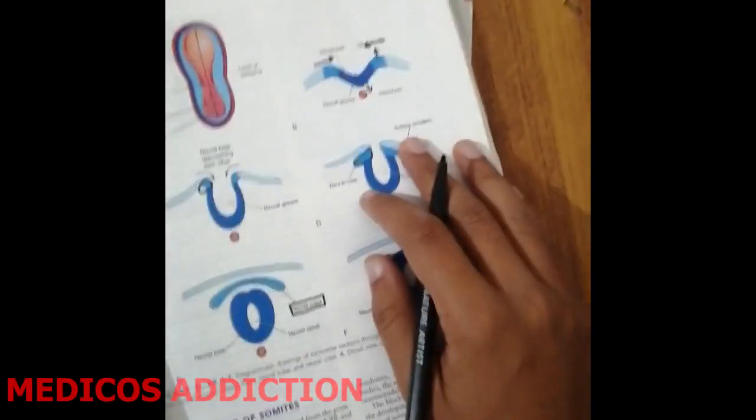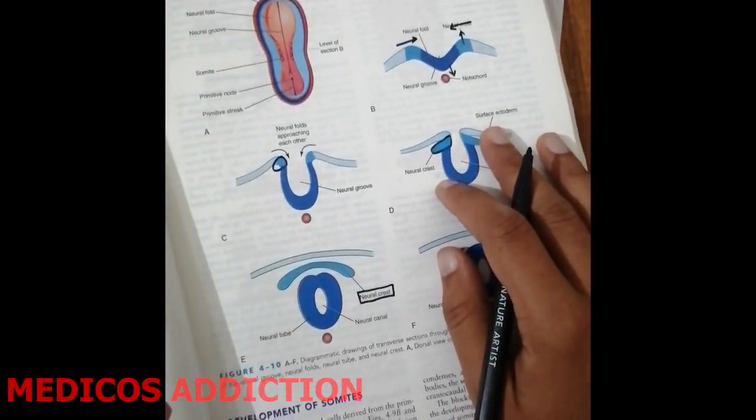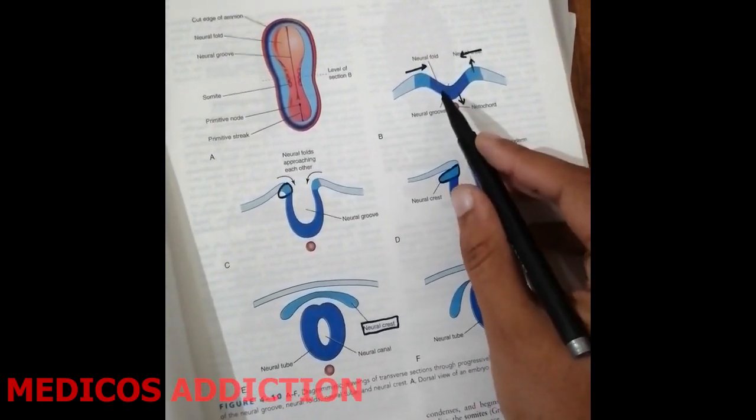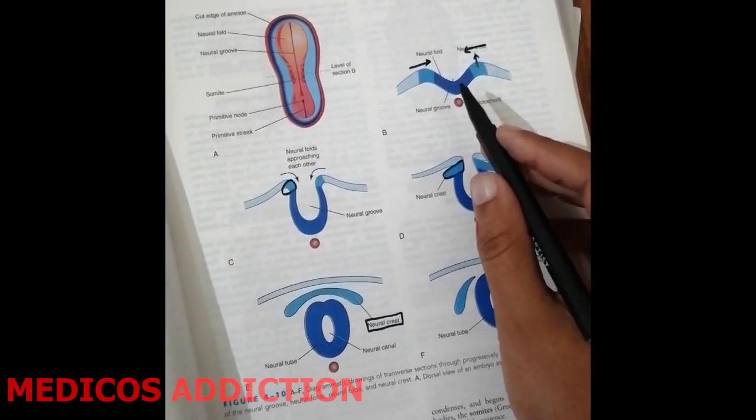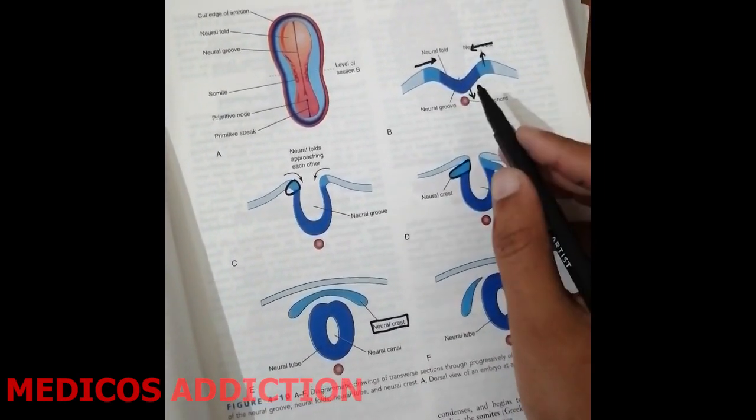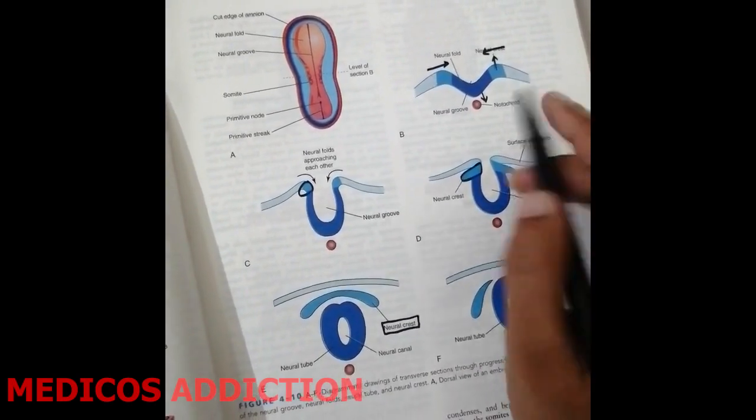Bismillahirrahmanirrahim, assalamualaikum. Today we are going to discuss the formation of neural crest cells from the neuroectoderm, what structures are derived from neural crest cells, and a trick to remember these structures.